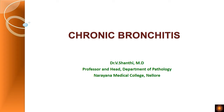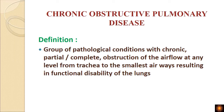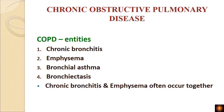Welcome friends. Today I will be discussing chronic bronchitis, which is a type of chronic obstructive pulmonary disease. In COPD, as the name suggests, there is some obstruction in the respiratory tract at any level — from the trachea to the smallest airways — either partial or complete. The conditions included in COPD are chronic bronchitis, emphysema, bronchial asthma, and bronchitis.